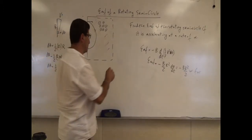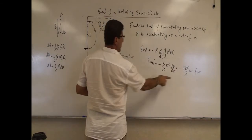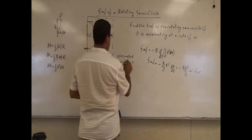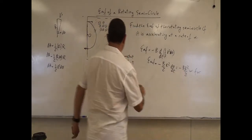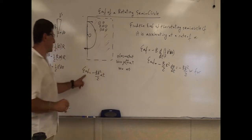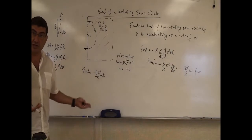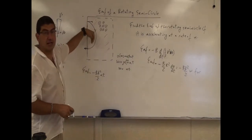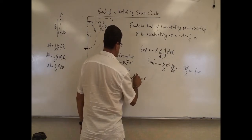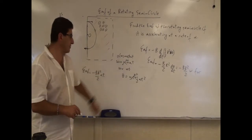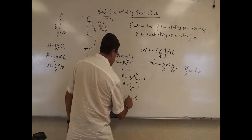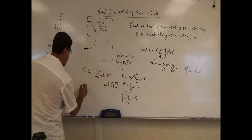Now let's do the case where alpha is constant. The equation for omega is ω = ω₀ + αt. With ω₀ = 0, we have ω = αt. Substituting into our EMF formula: EMF = -(B R²/2) · αt. So the EMF grows linearly over time, until the time when the semicircle has rotated π radians. Using θ = ½αt², setting θ = π gives t = √(2π/α). After that time the EMF switches direction.